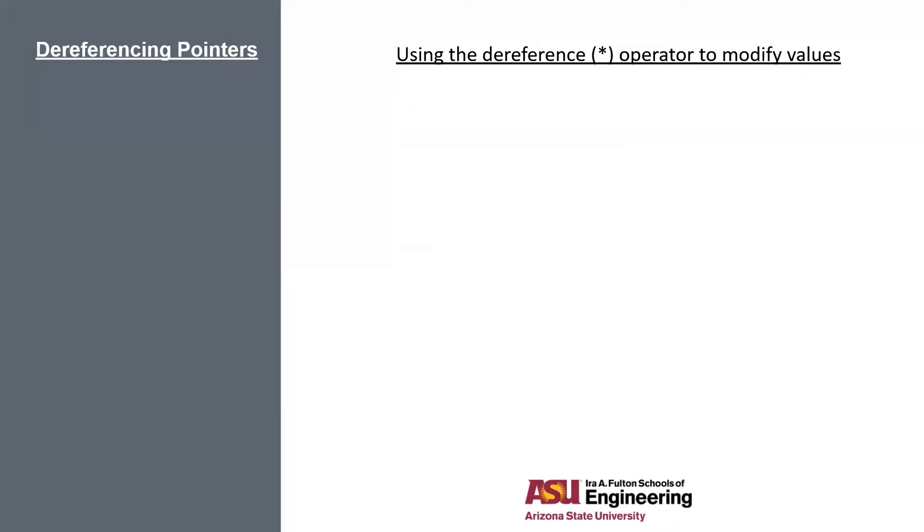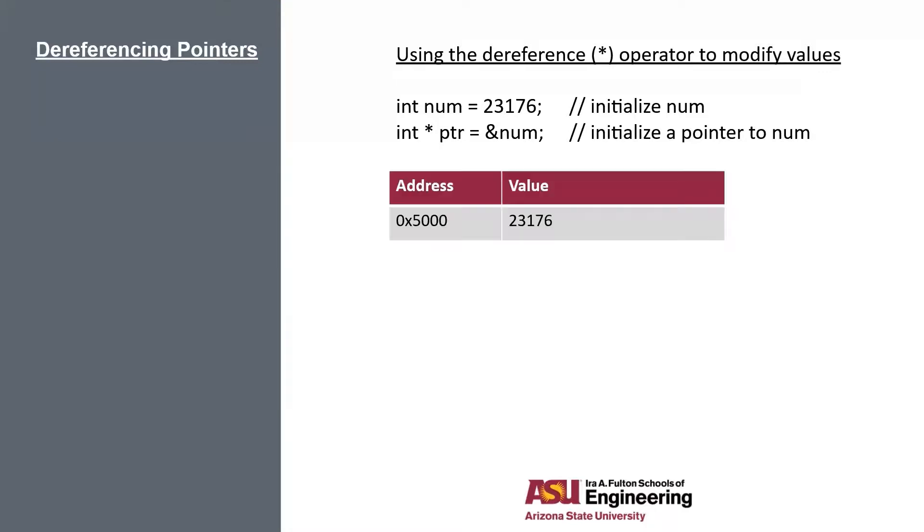Now, another use for the dereference operator. We can use it to actually modify values as well. Let's do the same initialization as before. This is what it looks like in memory. Now, look here, we are dereferencing the pointer, which is pointing to 0x5000 and then just setting it equal to 12. We're telling it to go to the address at 5000 and then set that value to 12. Now our new table looks like that. Our value got replaced with 12. This has the interesting consequence of switching the value of num as well. If we print out pointer and dereference it, we get the value at 5000. And also, num was associated with this memory location, so it will also print out 12. Since we modified the pointer that points to num, num also gets changed.